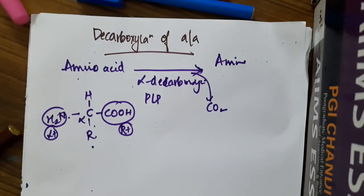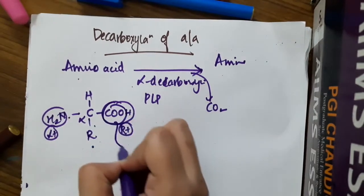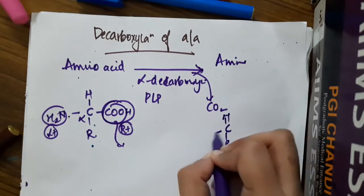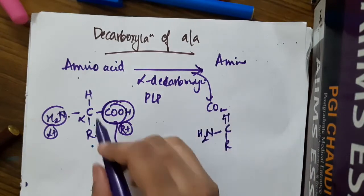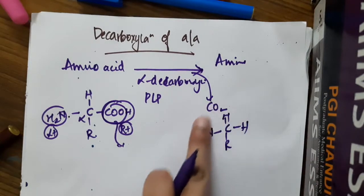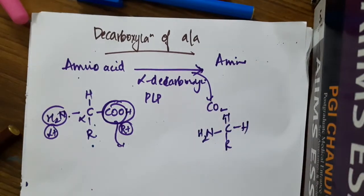In decarboxylation, this carbon dioxide is removed and then it results in formation of an amine where the rest of the structure remains the same but only carbon dioxide is removed. This results in formation of this structure which is called as amine.